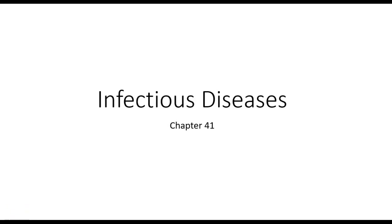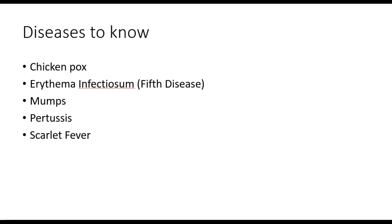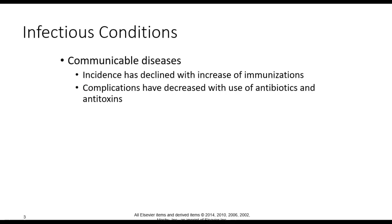This lecture will go over Chapter 41, Infectious Diseases. We've got some of the diseases listed on this slide, but there's more at the end of the PowerPoint presentation. Communicable diseases are diseases that can spread easily from person to person. The incidence has declined with an increase of immunizations, and complications have decreased because of the use of antibiotics and antitoxins.